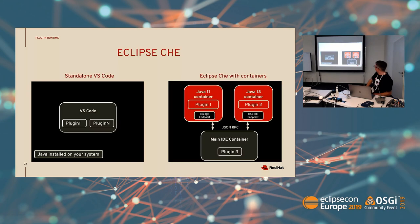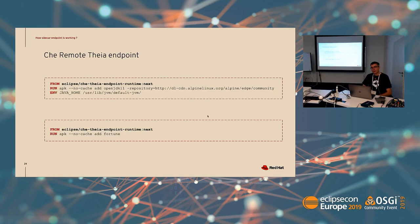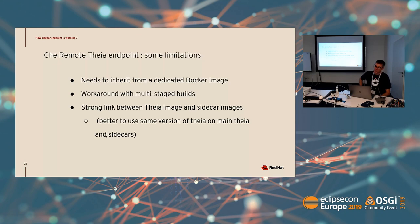There is the Che endpoint. This endpoint communicates with the main IDE container. When you start a new container, the endpoint tells the main Theia instance that it has a new plugin or set of plugins, and Theia will register the plugin for you. To use this endpoint, you inherit from the existing Docker image of the Che endpoint. Here I'm inheriting from the endpoint and installing Java, so this Docker image will have access to all the Java runtime. If my VS Code extension needs Java, I just say to use this image. For the demo, I will use the Fortune tool — so I inherit from the default endpoint runtime and add the Fortune tool.